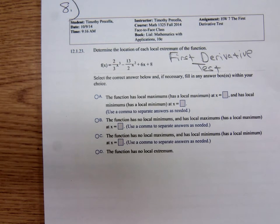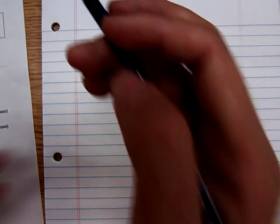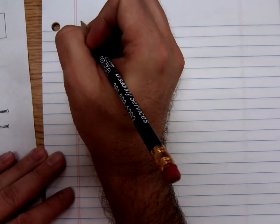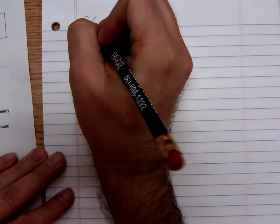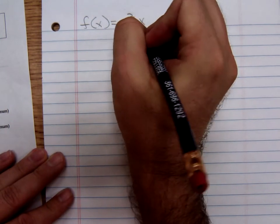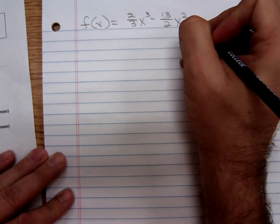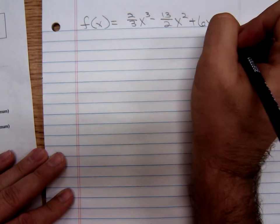In order to find local extrema, we need to find the derivative. So, with your permission, I'm just coming over here to a nice clean sheet of paper. I'm going to write down the function f of x equals two-thirds x cubed minus 13 halves x squared plus 6x plus 8.